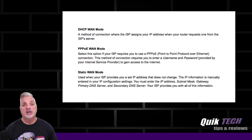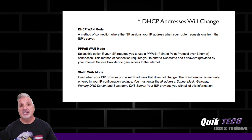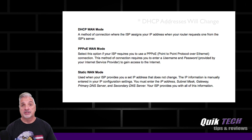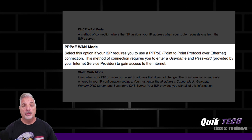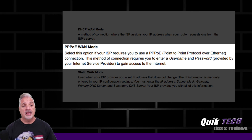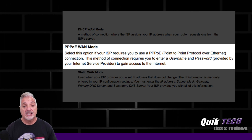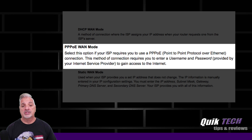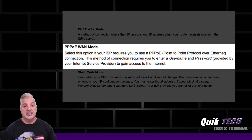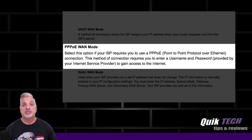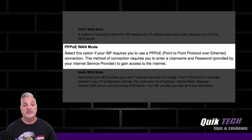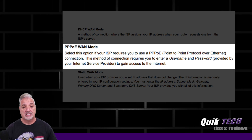So it's pretty much plug it in, leave it set to DHCP and the ISP should issue an address and you should be good to go. With PPPoE, which stands for Point to Point Protocol over Ethernet, select this option if your ISP requires you to use a PPPoE connection. This method of connection requires you to enter a username and password which is provided by your ISP to gain access to the internet.